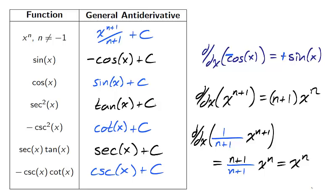The general antiderivative of x to the n when n is not equal to negative 1 is x to the n plus 1 divided by n plus 1 plus c.